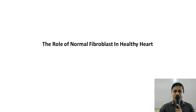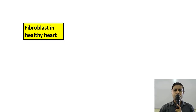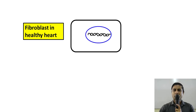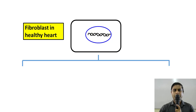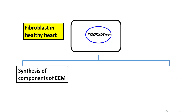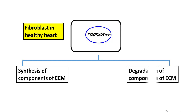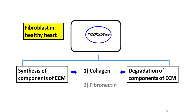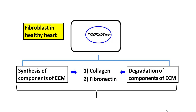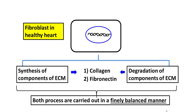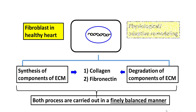Before discussing fibroblast stimulation, let us understand the role of the normal fibroblast in the healthy heart. In the normal heart, the healthy fibroblast is concerned with the synthesis and degradation of components of the extracellular matrix. The most important components of the extracellular matrix include collagen and fibronectin. Normally, these two processes exist in a finely balanced manner — this is called physiological or adaptive remodeling, an entirely normal process occurring in healthy hearts.